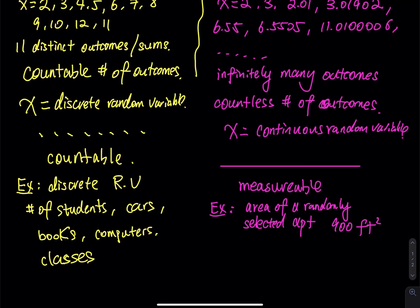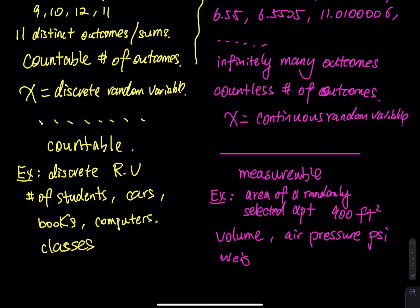Another example: the volume of a water bottle. You don't count the volume with your finger — you measure it: one gallon, two gallons, half a gallon. Air pressure is also measurable, not countable — typically measured in psi. The weight of a randomly selected laptop: you say two pounds, three pounds, 2.5 pounds, 3.01 pounds — you always give a number followed by a unit.